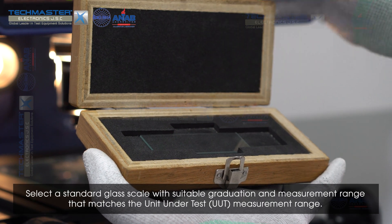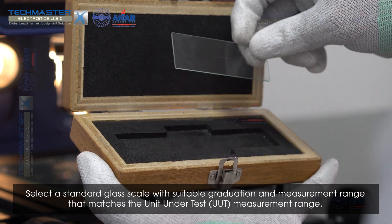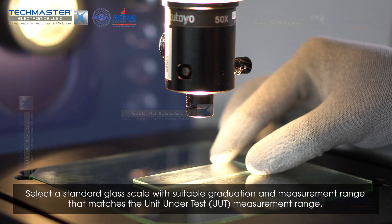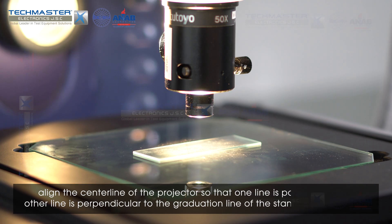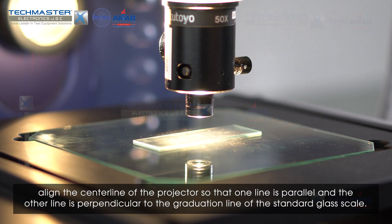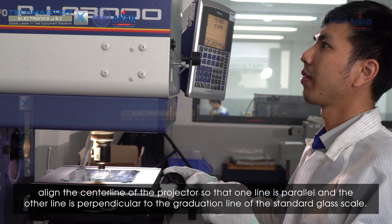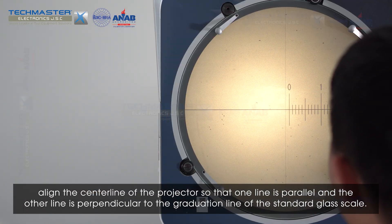Select a standard glass scale with suitable graduation and measurement range that matches the unit under test measurement range. Place the standard glass scale on the measuring table. Align the center line of the projector so that one line is parallel and the other line is perpendicular to the graduation line of the standard glass scale.